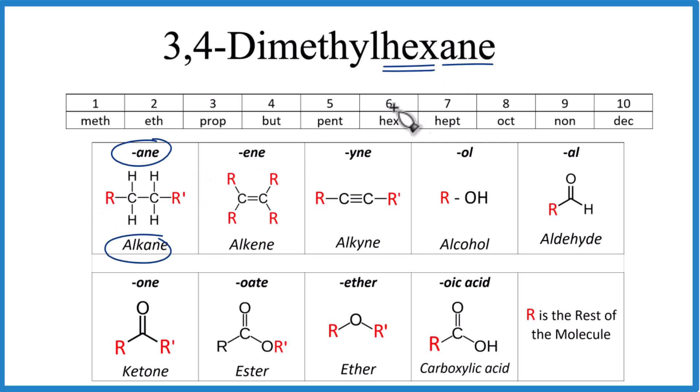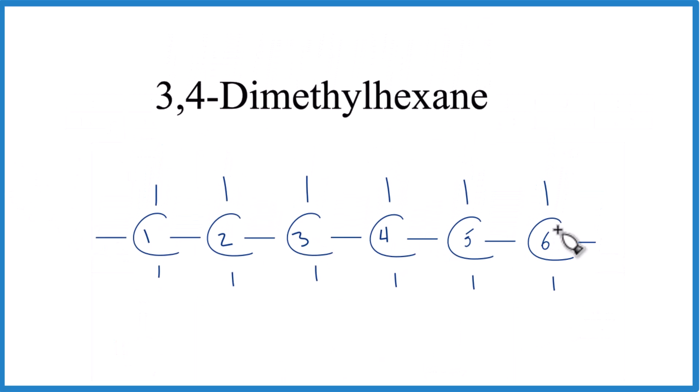Then we have hex. Hex is six, so we'll have six of those carbons in a chain. Let's draw that, then we'll deal with this first part here. So here's our hexane, and each one of these lines goes to a hydrogen. You'll note each carbon has four different bonds.